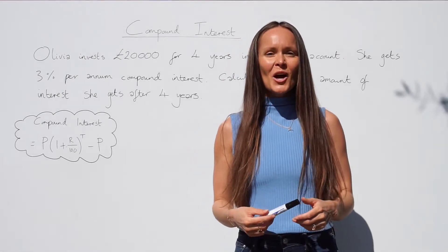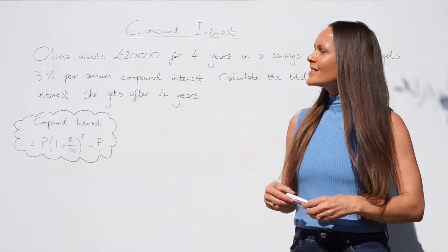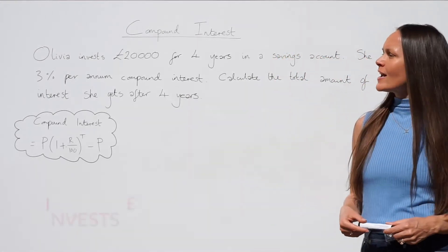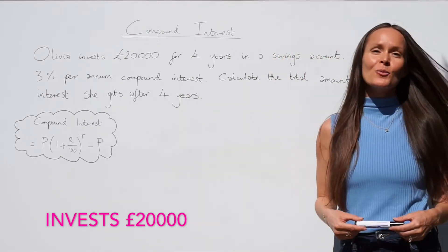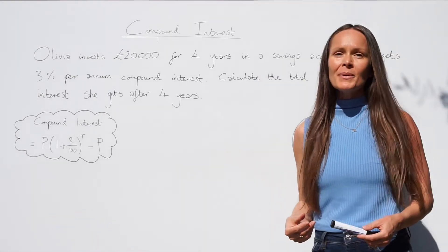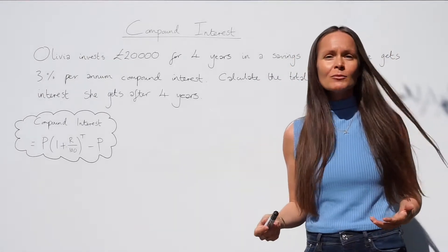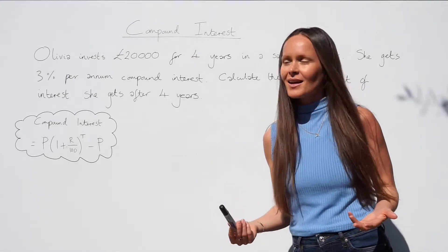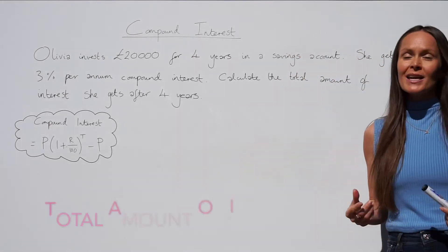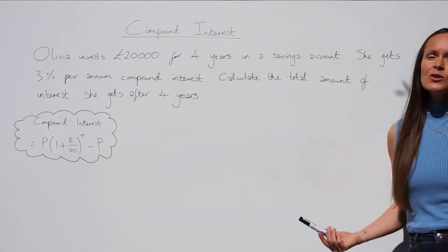In this lesson I'm going to show you some compound interest questions. In the first question, Olivia invests £20,000 for four years in a savings account. She gets three percent per annum compound interest — per annum just means each year. Calculate the total amount of interest she gets after four years.